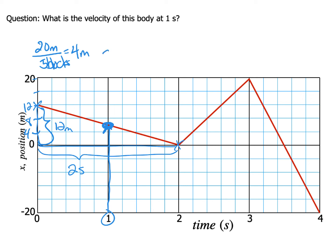Great. So the slope is rise over run, and that's going to equal the rise, which is 12 meters on this line, divided by two seconds, so that's going to be six meters per second. So the velocity on this slope at one second is equal to six meters per second.